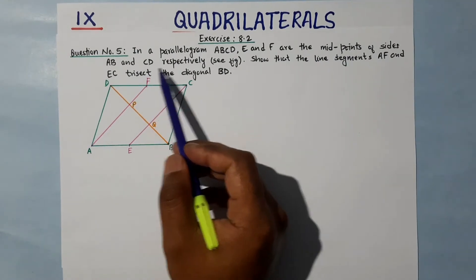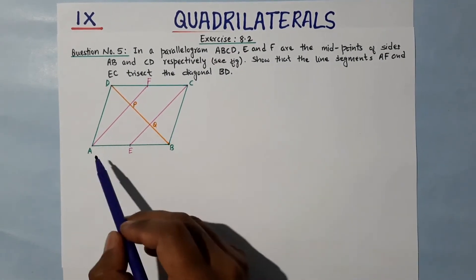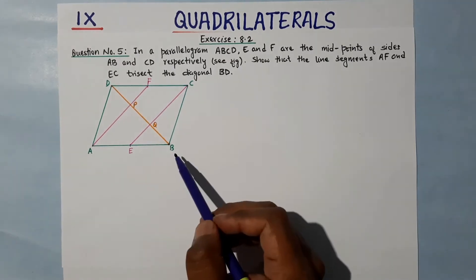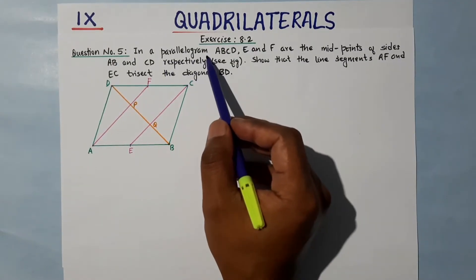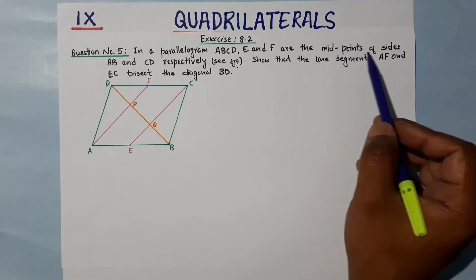...are the midpoints of the sides AB and CD respectively. See the figure. Okay, this figure - ABCD is the parallelogram. This parallelogram ABCD, and E and F are the midpoints of side...